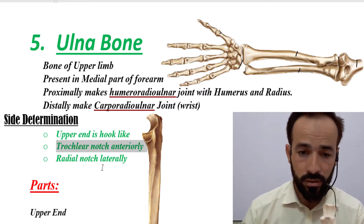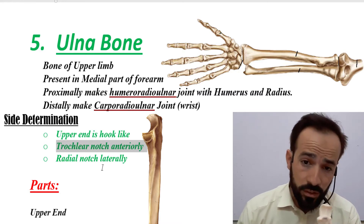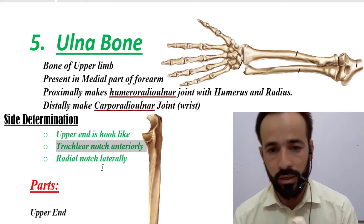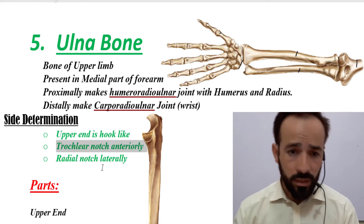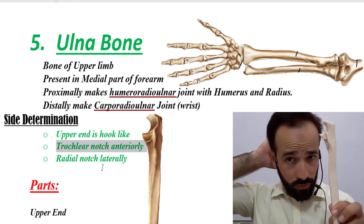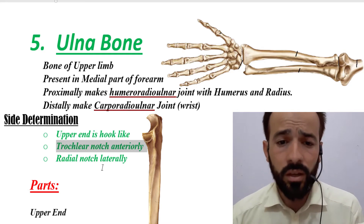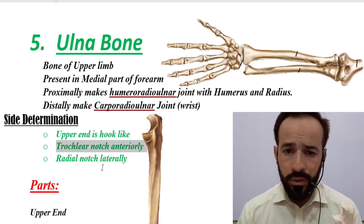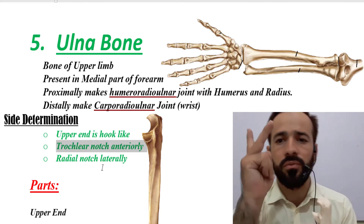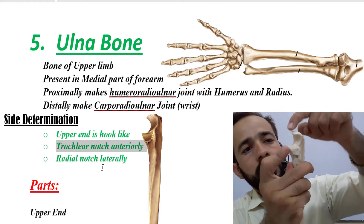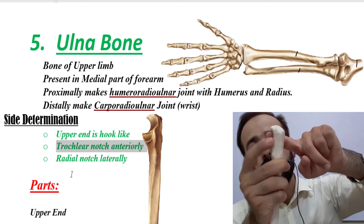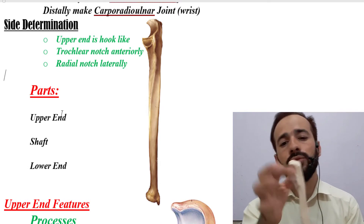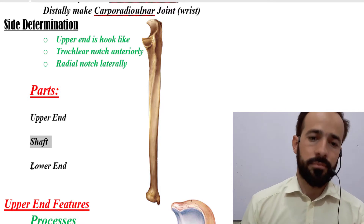The ulna is a typical long bone, so it has an upper end, a shaft, and a lower end. The external features of the upper end of the ulna include processes and notches. The upper end has two important processes and two notches.